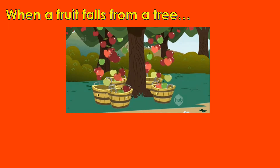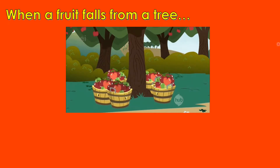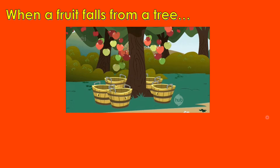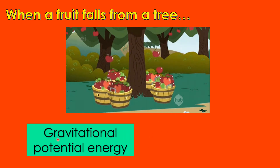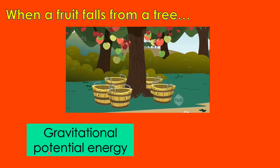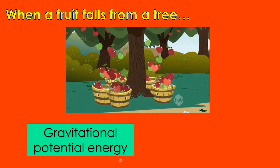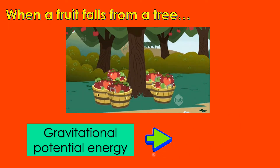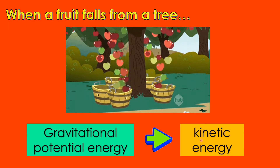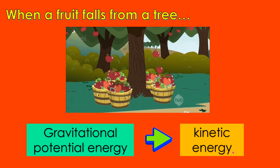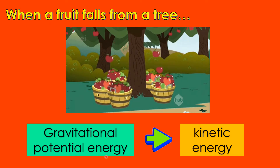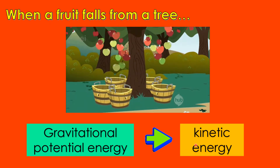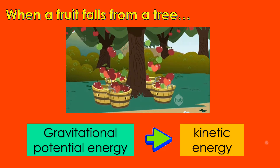When a fruit falls from a tree, what energy transformation takes place? First, there is gravitational potential energy. Then it will transform to kinetic energy. From gravitational potential energy, it will transform to kinetic energy.